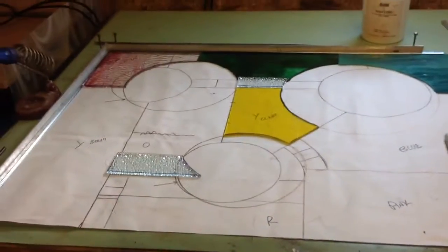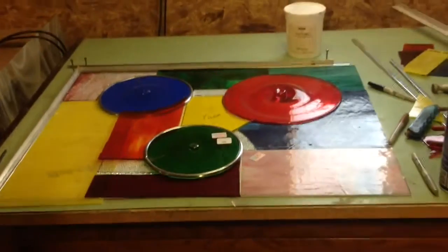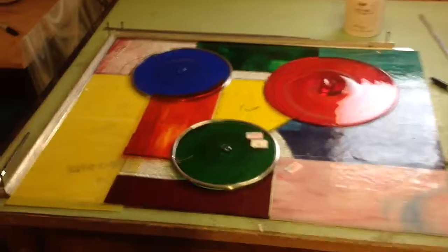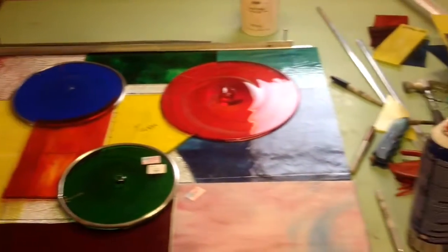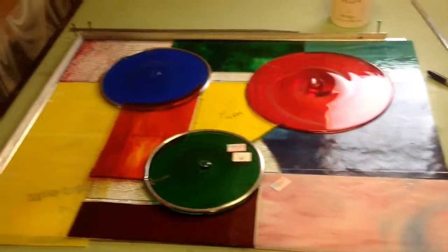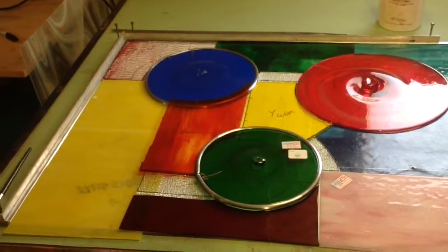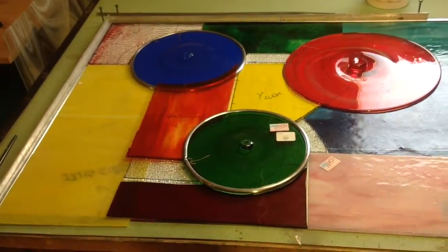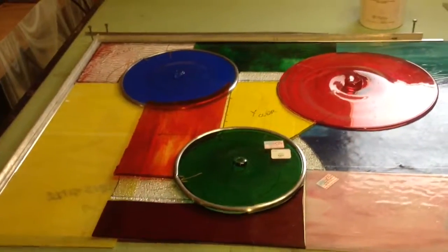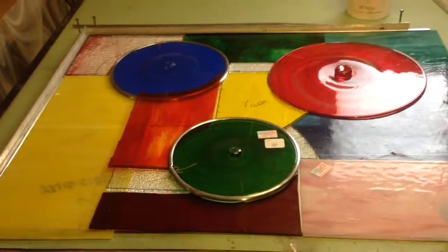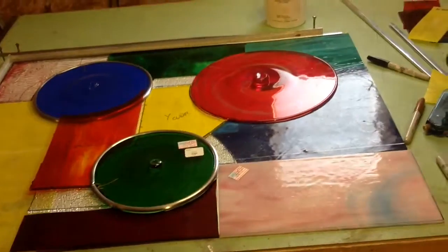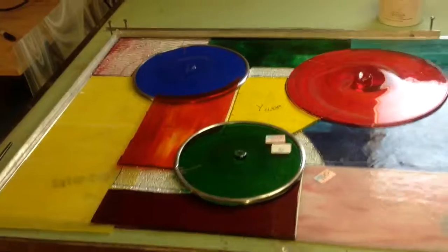Looking good. Okay, so here it is. These are the colors. They're cut. Now, I have to actually start putting the came on. And one of the things I'm going to have to do is I'm going to have to grind this glass down. So that will be in the next segment. Thank you.